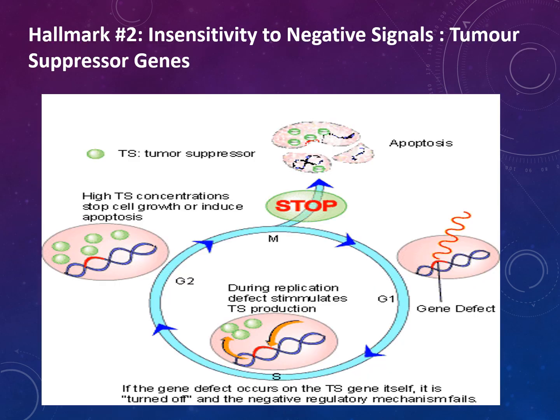The second hallmark is insensitivity to negative signals, also known as tumour suppressor genes. Tumour suppressor genes are altered by inactivating mutations, which can lead to cancer through point mutations or deletions of chromosomal regions. They also need to alter the methylation of the promoter. A diagram shows how a tumour suppressor gene operates and how it affects apoptosis and replication.